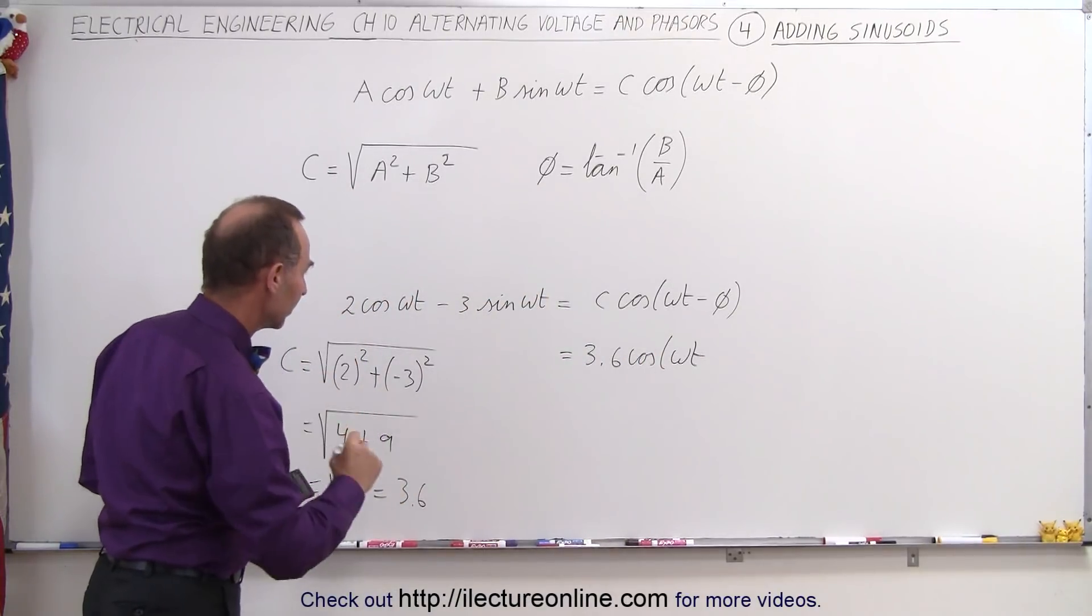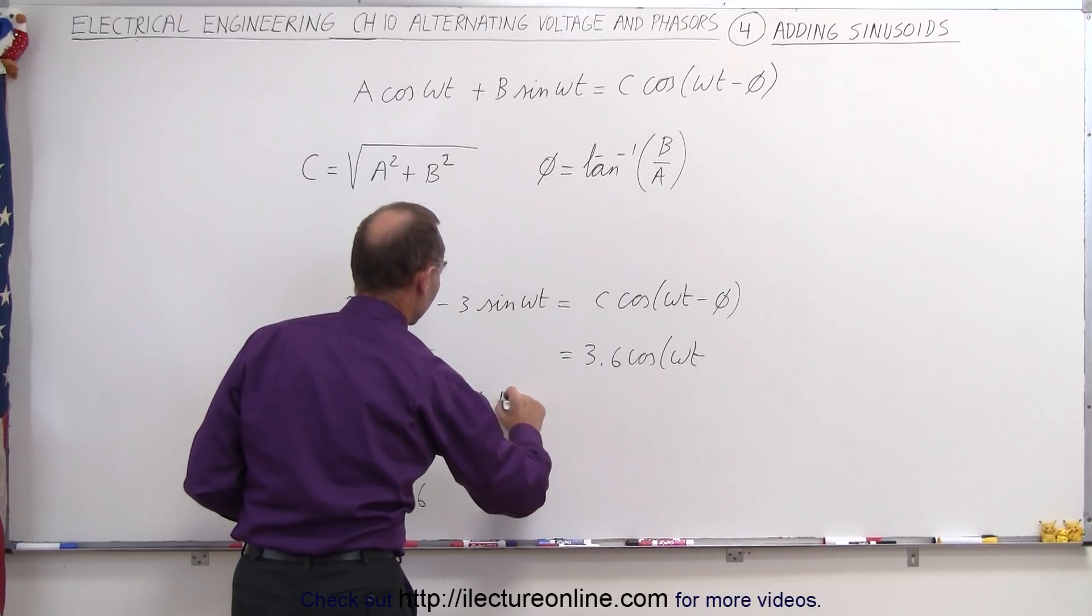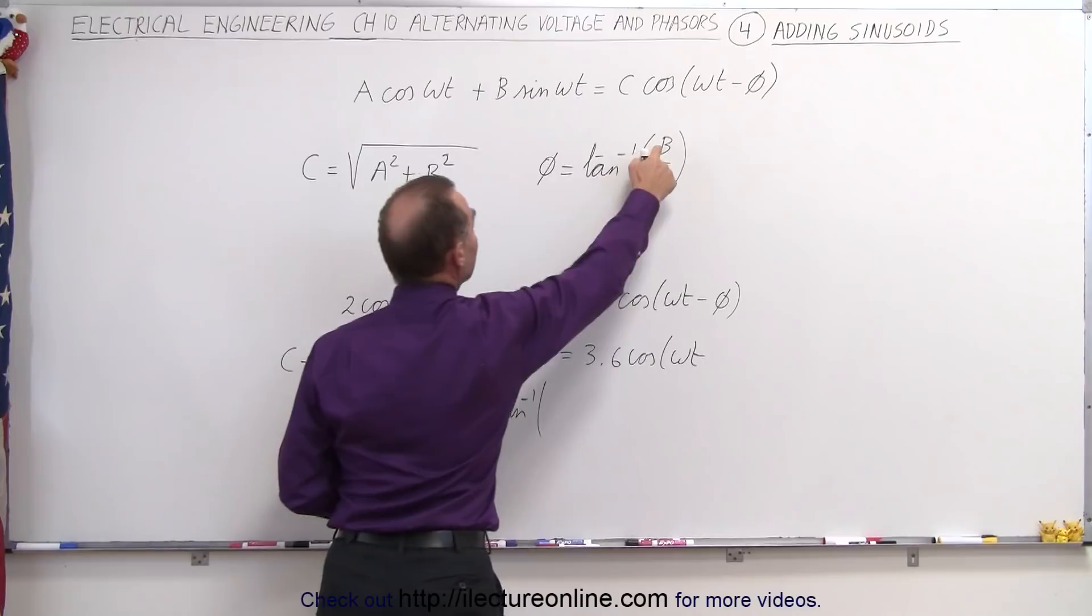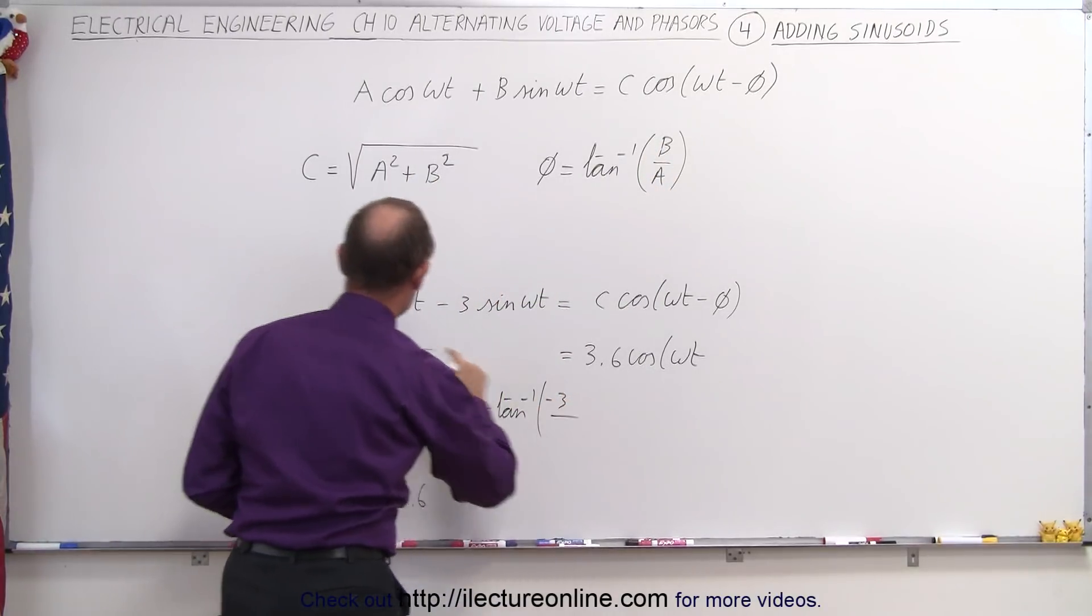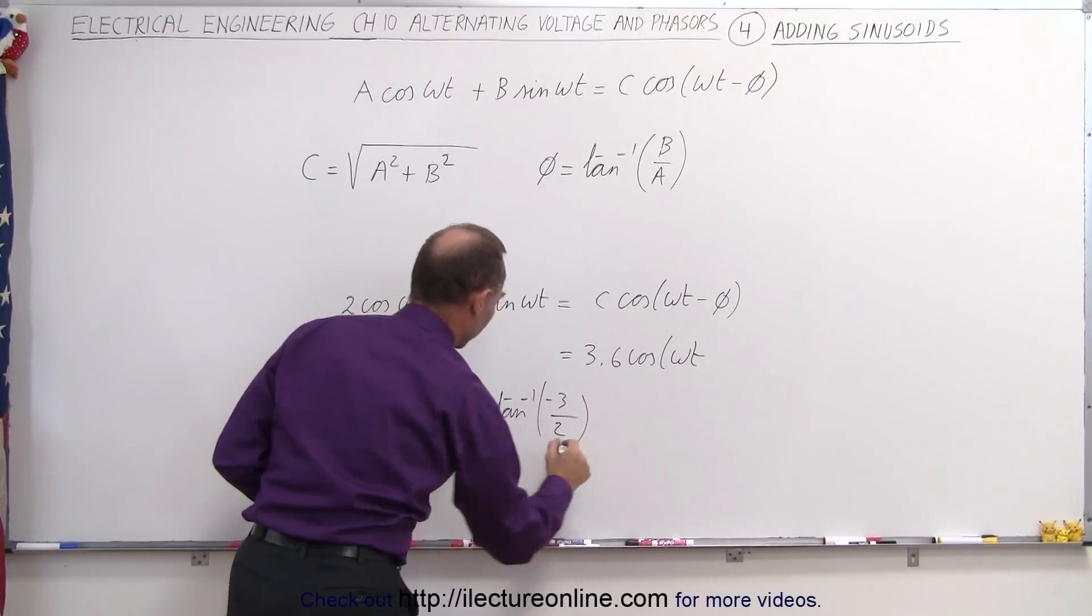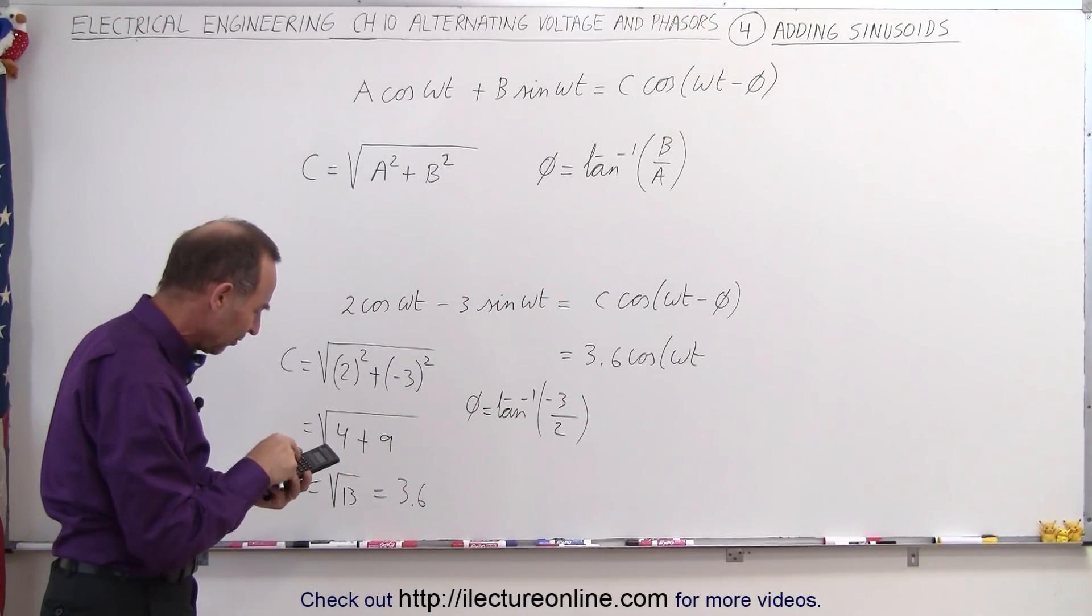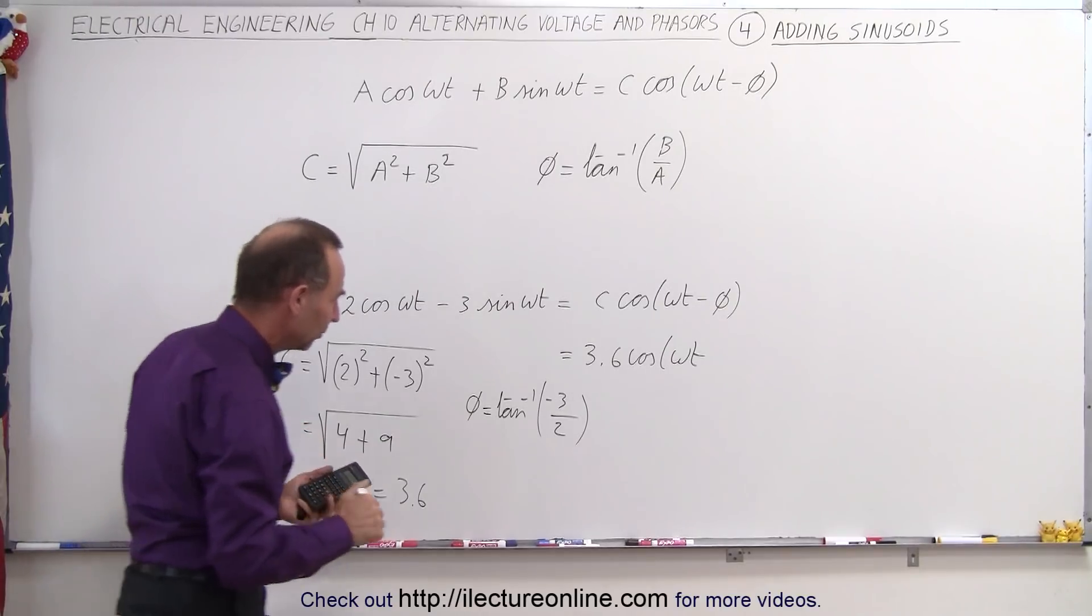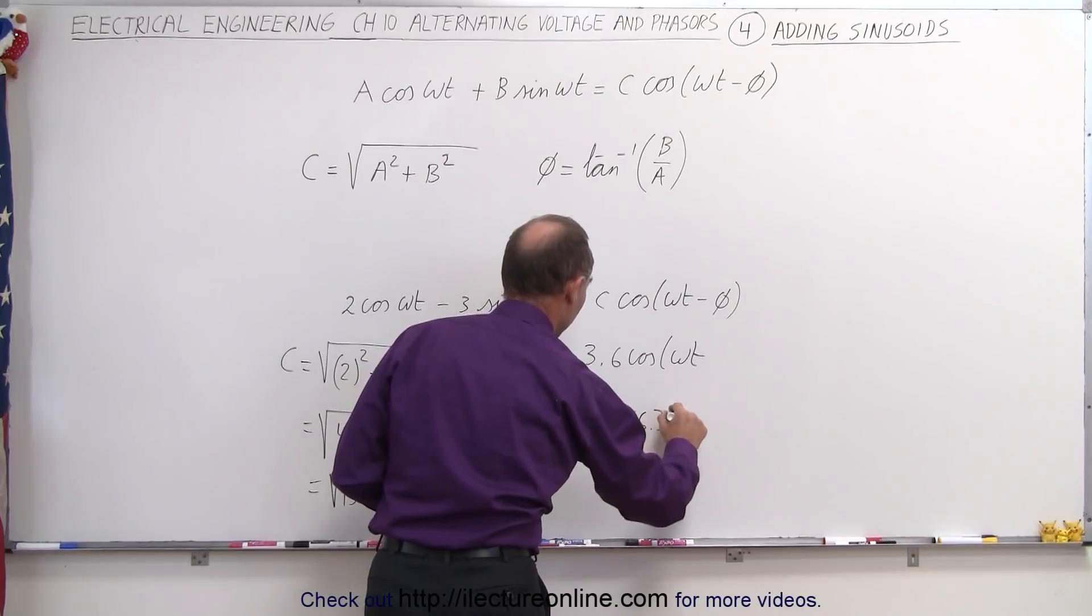So the phase angle can be found by saying phi is equal to the inverse tangent of B over A. Now in our case, B is negative 3 and A is positive 2. So we take 1.5, make that negative, take the inverse tangent of that, and we get minus 56.3 degrees.